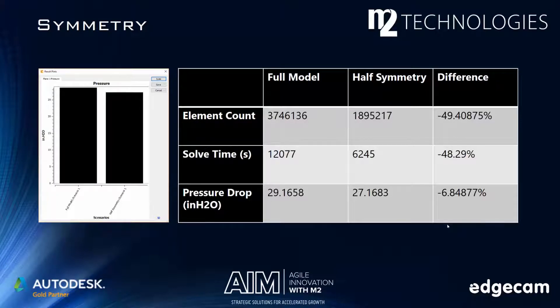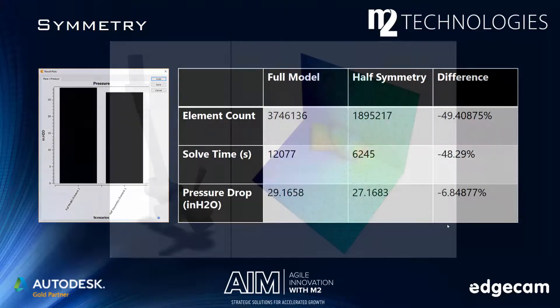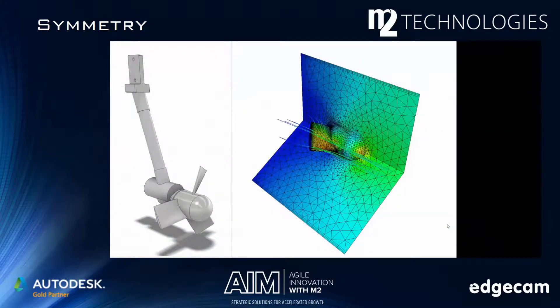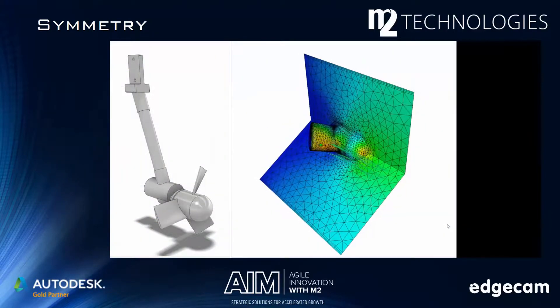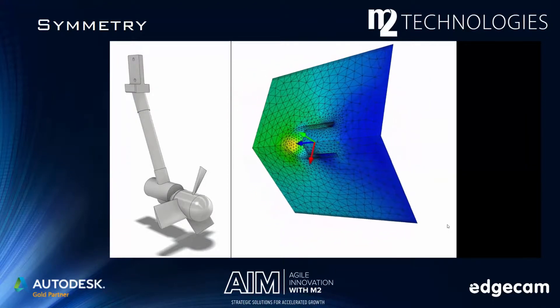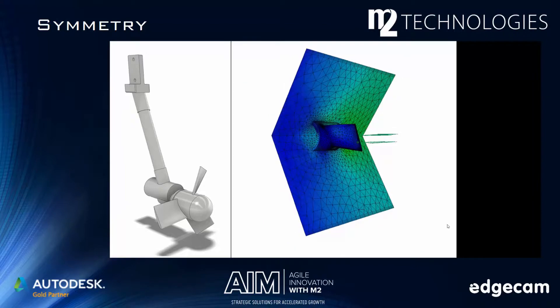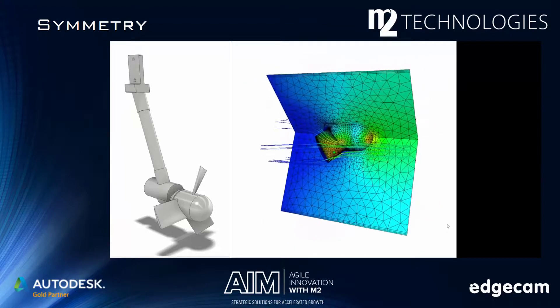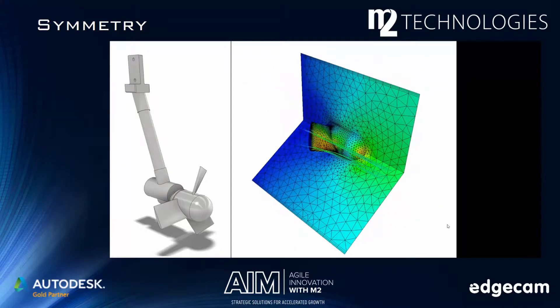Note the time savings, though. Using about half the elements in half the time, I'm able to get results that are effectively the same. I use this as much as possible for that reason. And it doesn't have to be just one half — if the model is appropriate, I might get away with modeling a quarter or eighth. In the case of parts that exhibit a revolved pattern about an axis, I may only model one or two instances of this pattern. Just remember to apply slip symmetry on any fluid surface that touches the cutting planes.